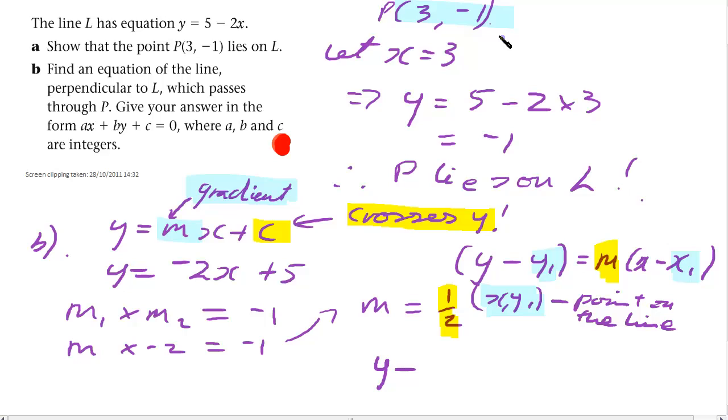So we've got y minus y1. y1 is minus 1. Equals m. m is a half. Open brackets. x minus x1. x1 was this value of 3.